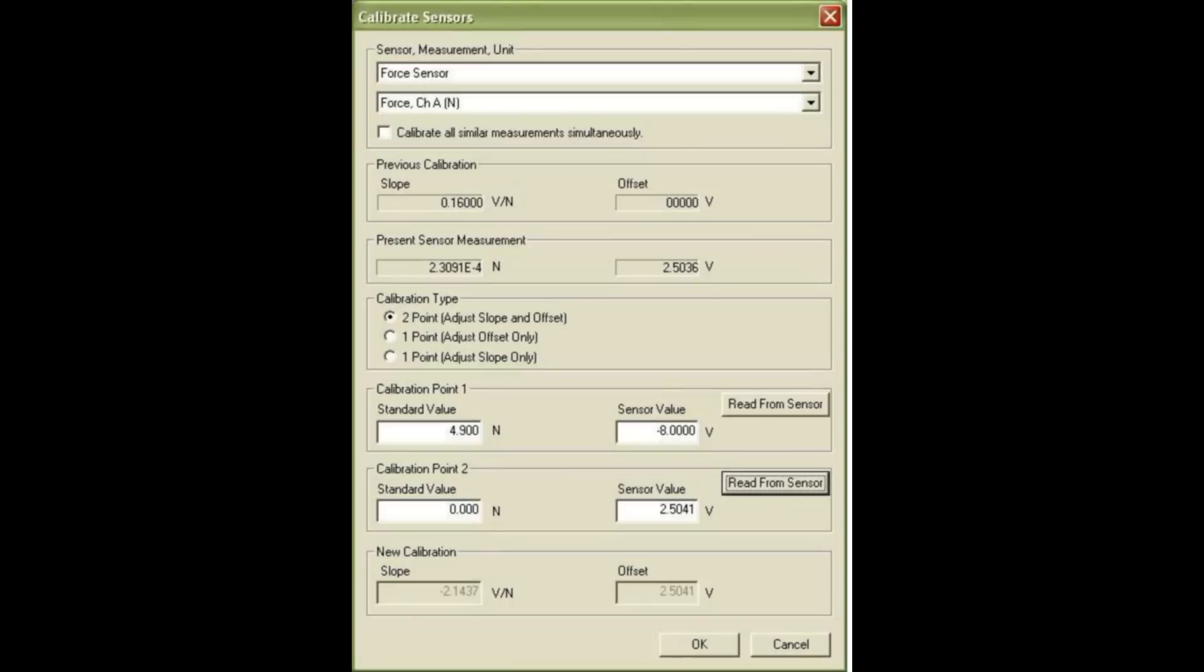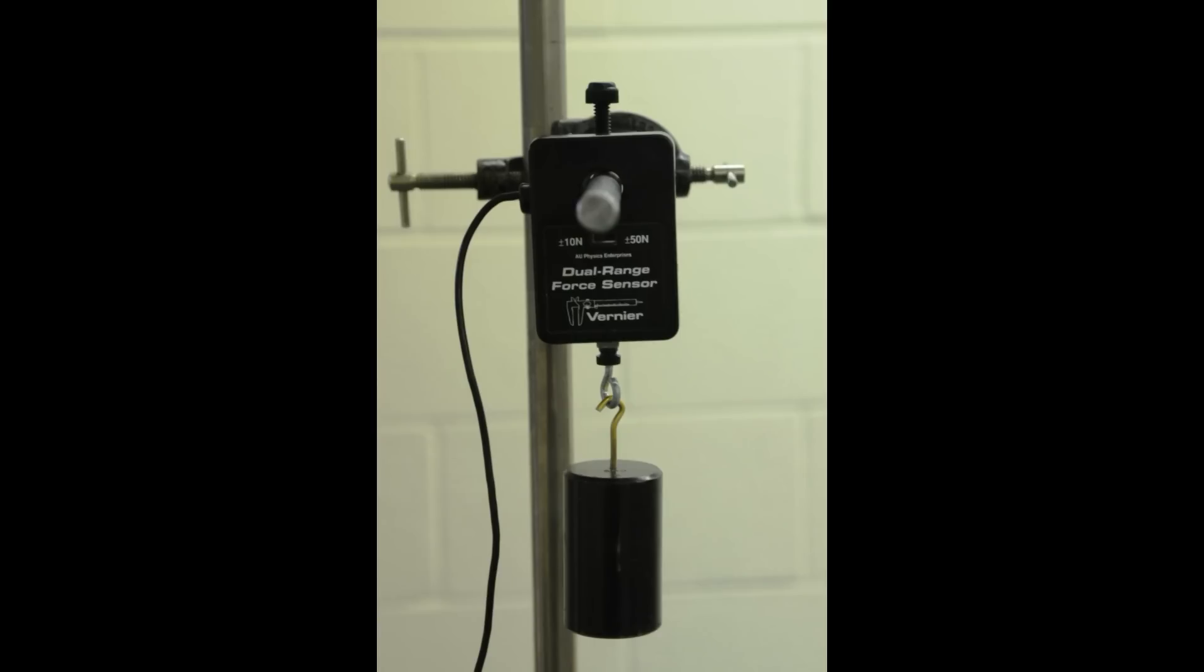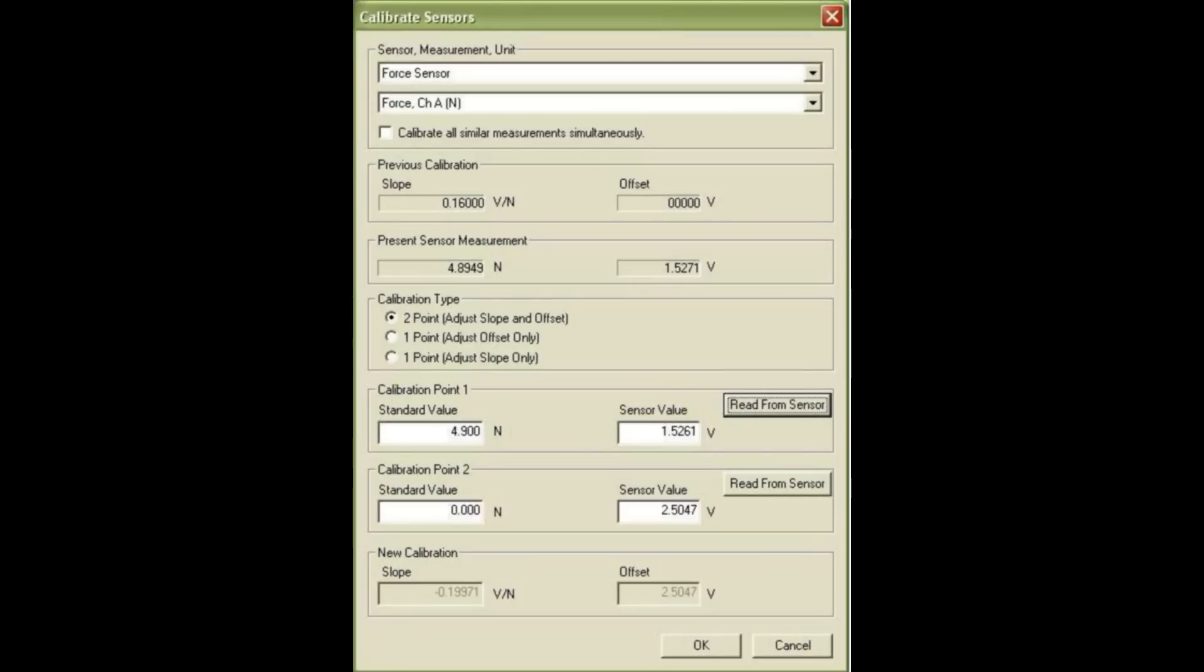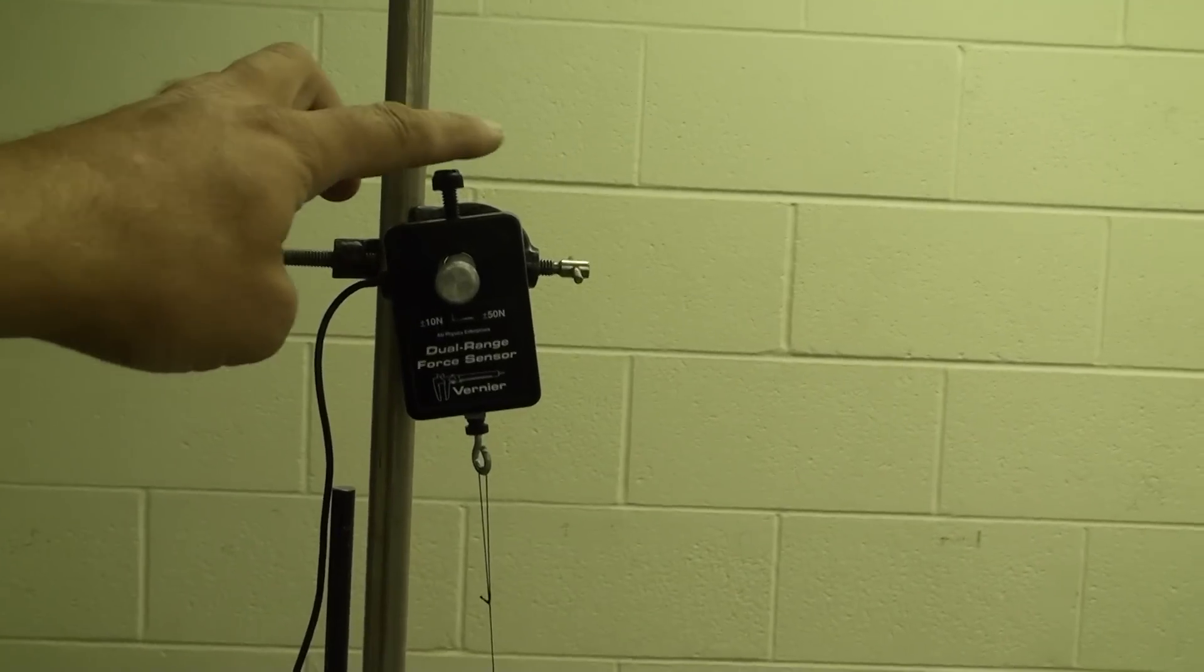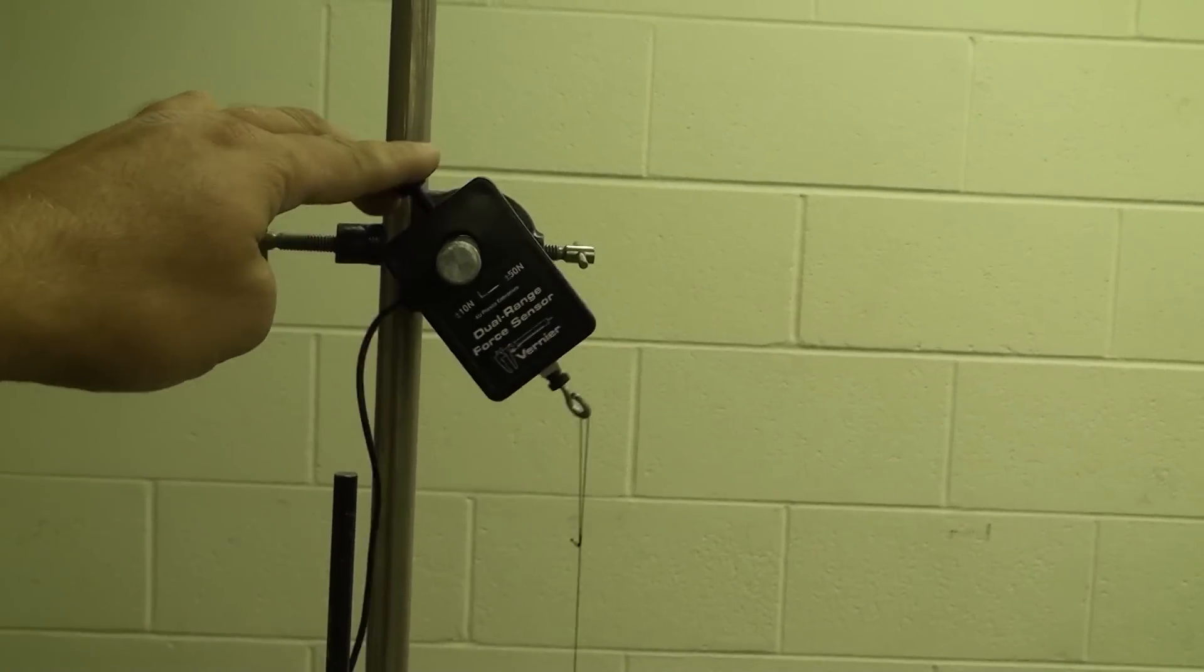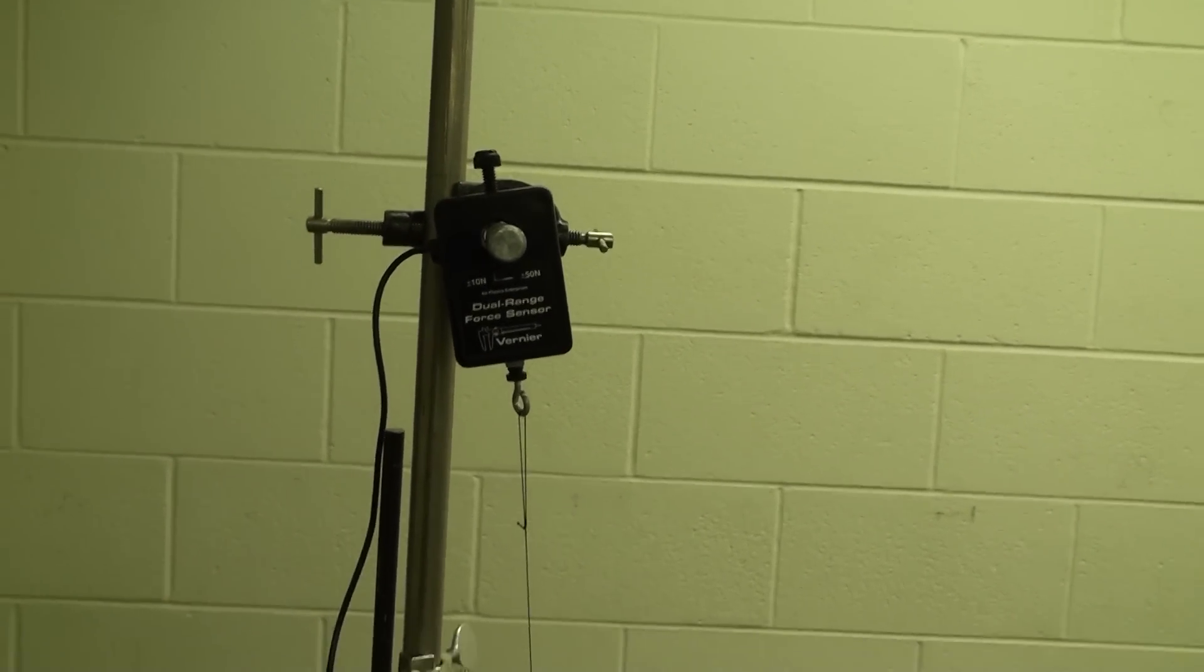Calibrate the force sensor in the usual way using a 500 gram weight and calling it 4.9 newtons. Make sure that the force sensor is able to swivel to point directly along the direction of the string tension.